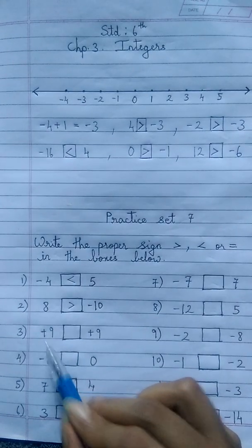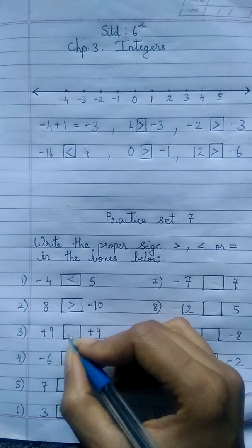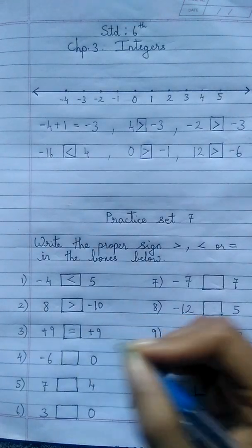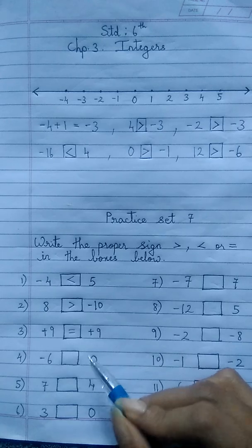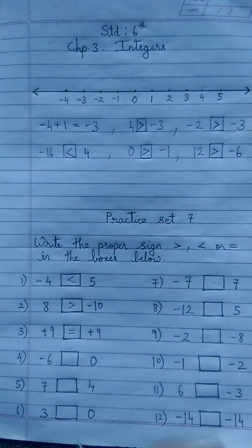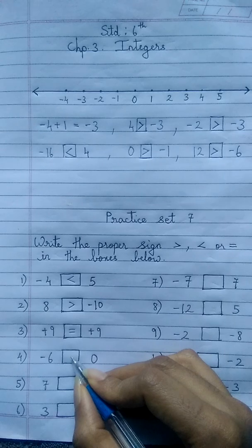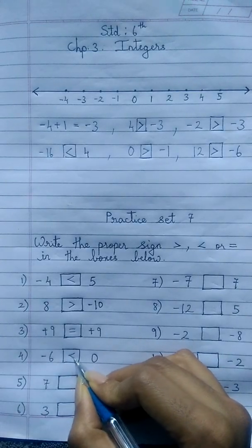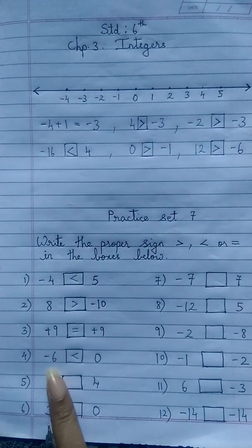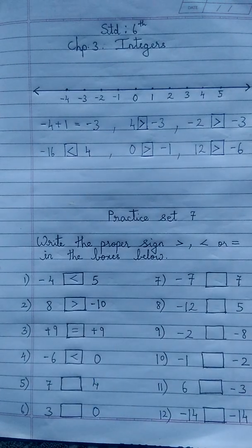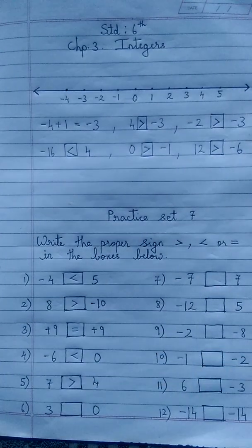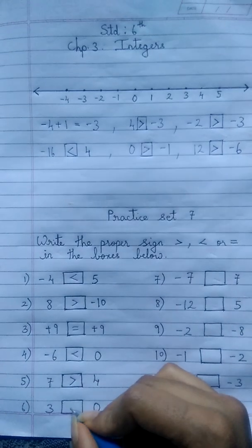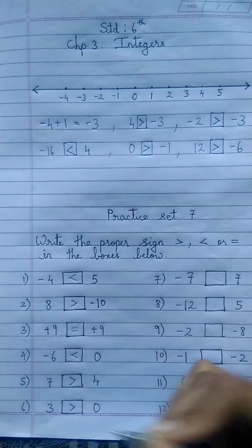Next: plus 9 and plus 9 — both are equal, so we put the equal to sign. Then minus 6 and 0: zero is to the right of minus 6, and 0 is greater than all negative numbers, so minus 6 is less than 0. Number 5: 7 and 4 — we know 7 is greater than 4. Then 3 and 0 — 3 is greater than 0.